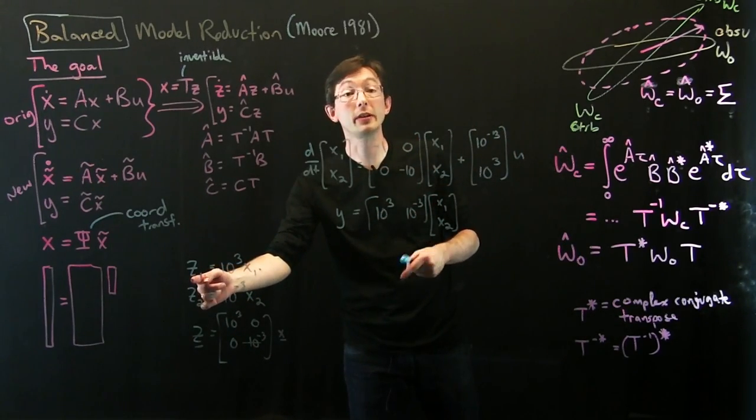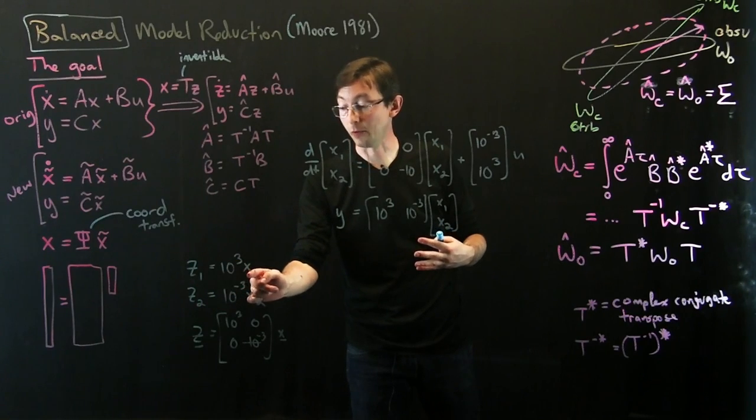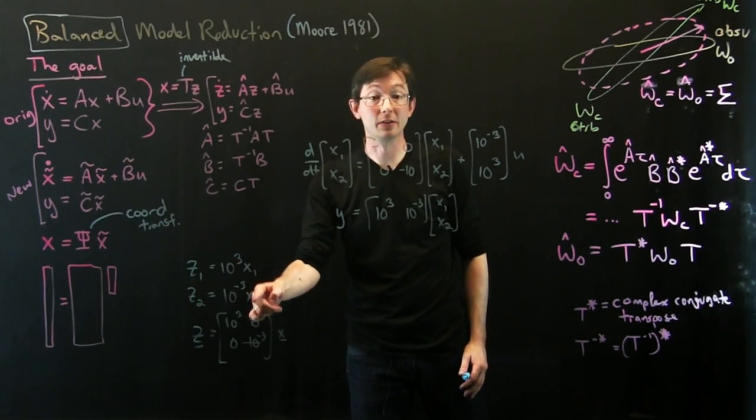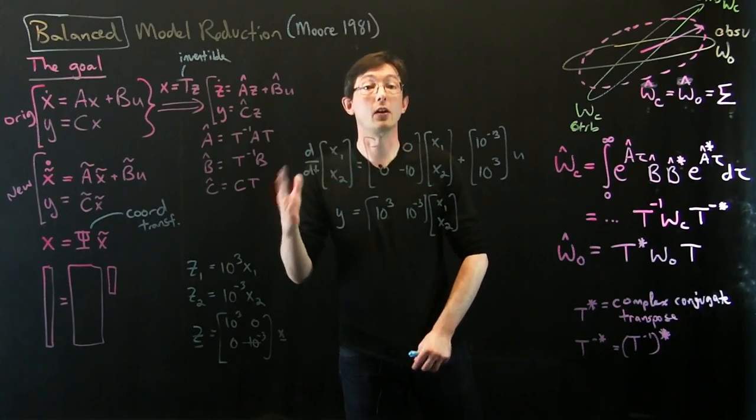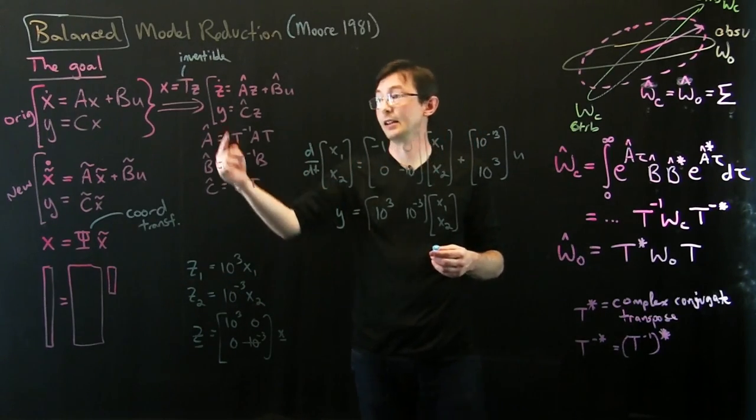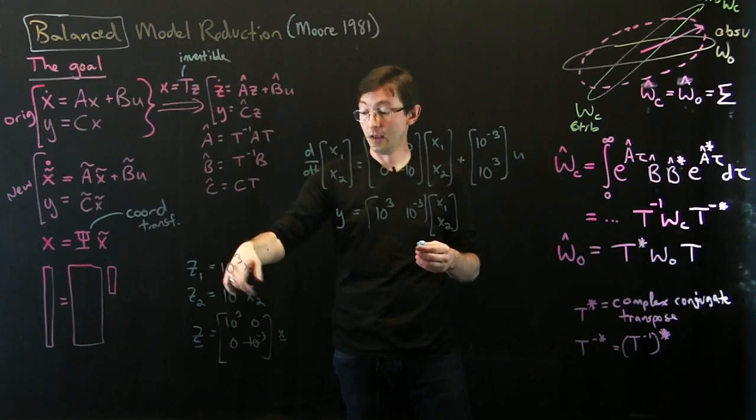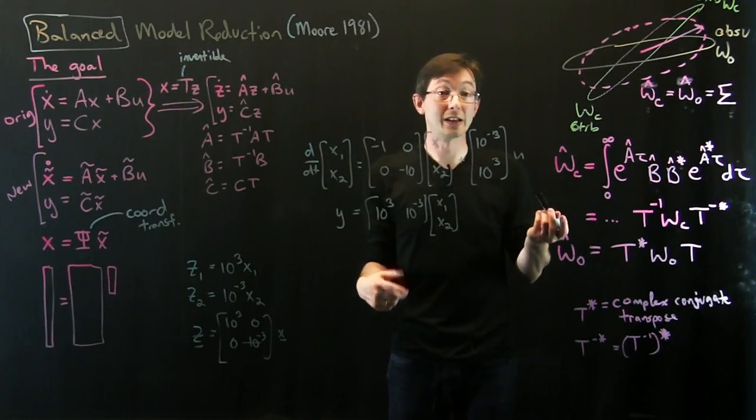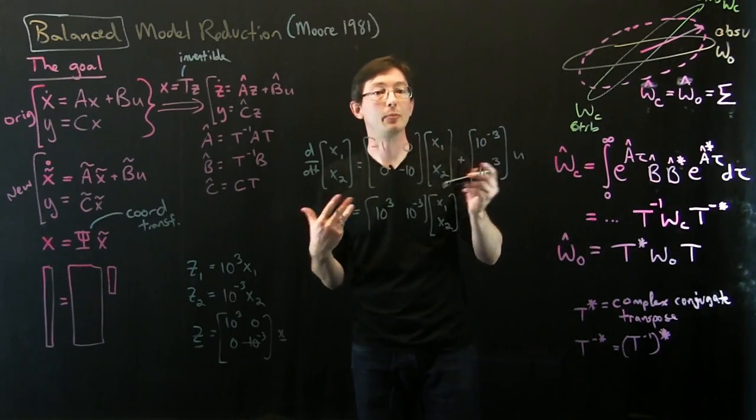What this is doing, all I'm doing is rescaling x1. I'm making it a thousand times bigger, and I'm rescaling x2 to make it a thousand times smaller. That's all I'm doing. That's what the T matrix does, is it just rescales my state. But what we're going to find is that in those new z coordinates, we actually get balanced dynamics.